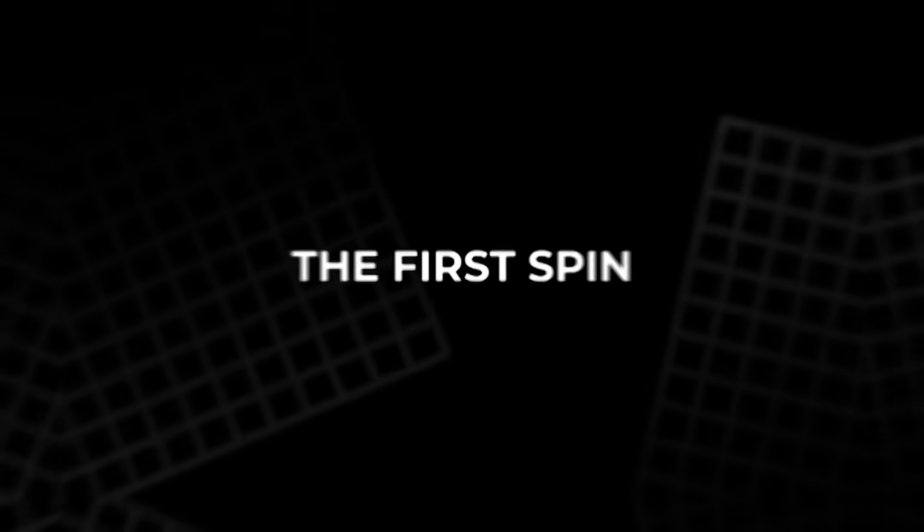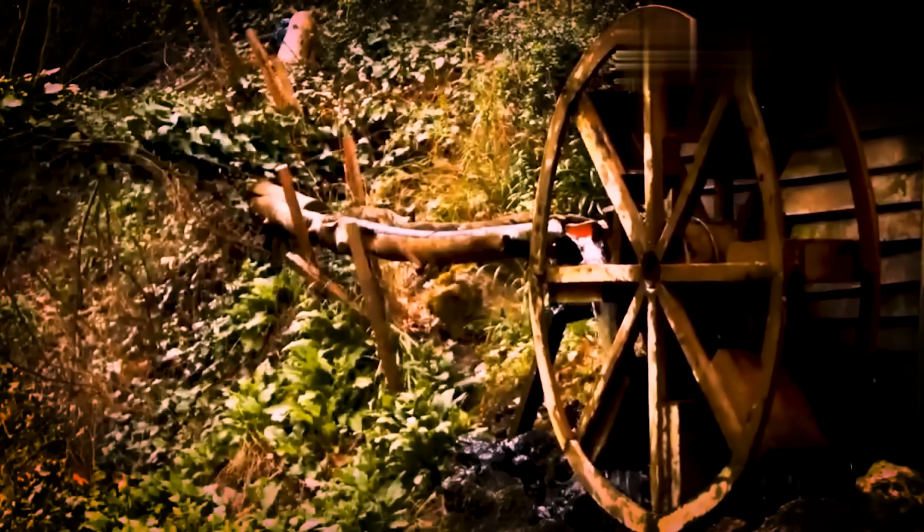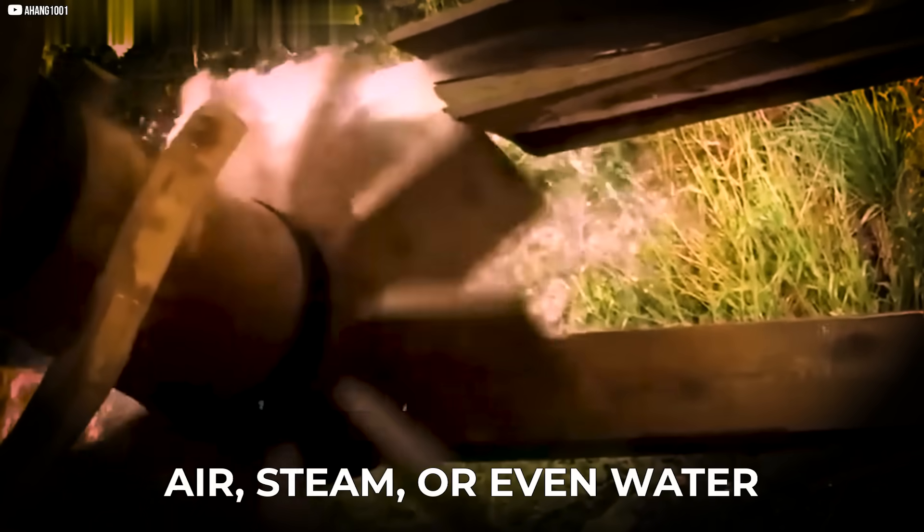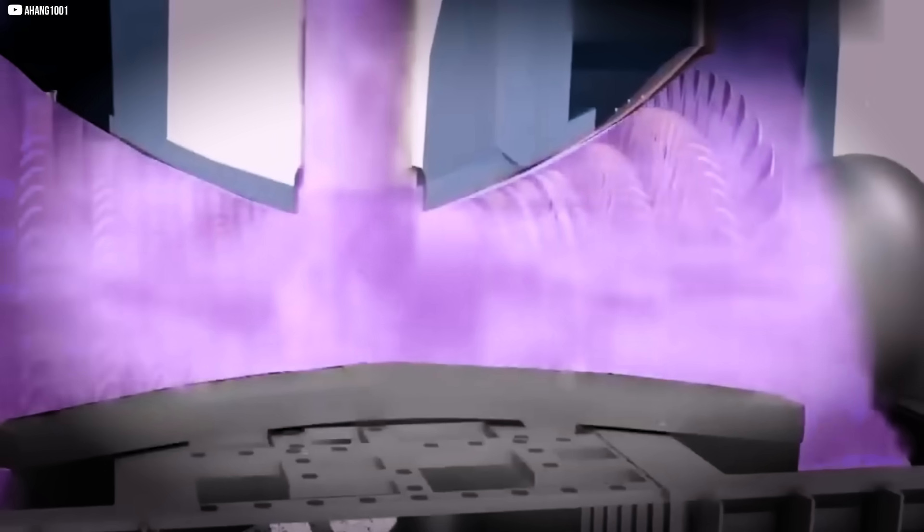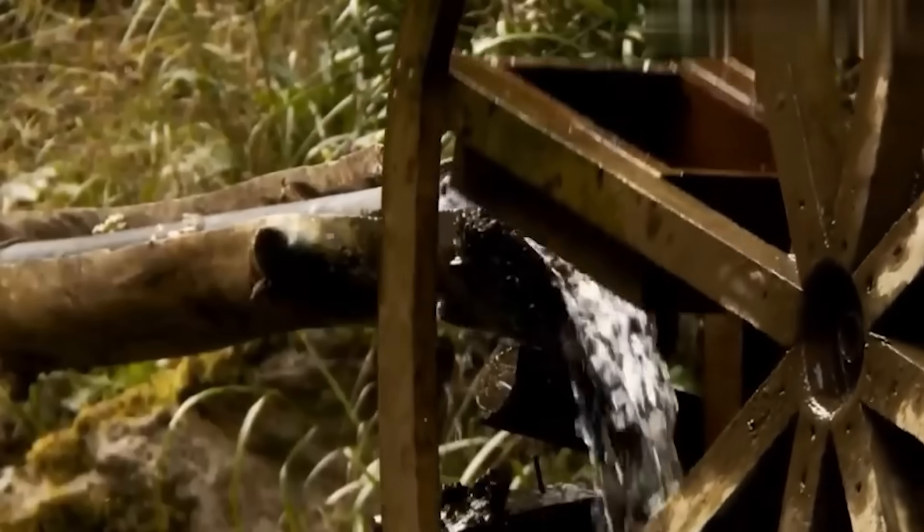The first spin. Tesla's early design was beautiful in its simplicity. A flat disc mounted on a shaft, placed inside a casing. The working fluid, air, steam, or even water, entered tangentially, grazing the disc's edge. At low speeds, nothing much happened. The fluid flowed lazily across the disc, barely touching it.